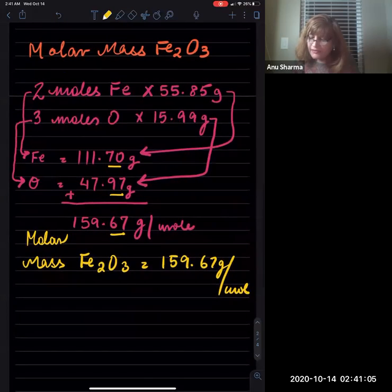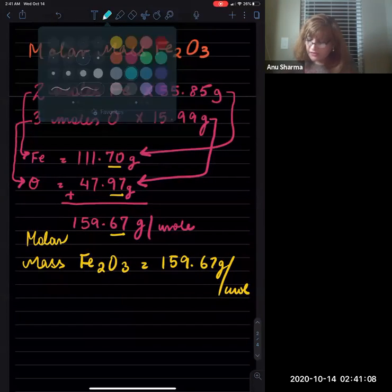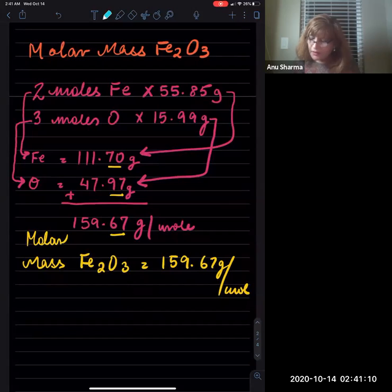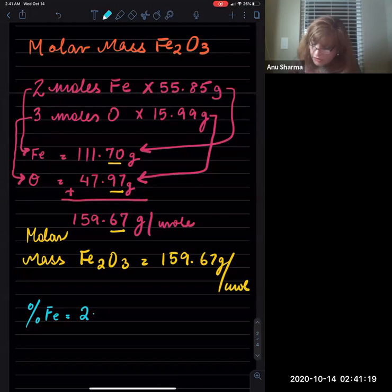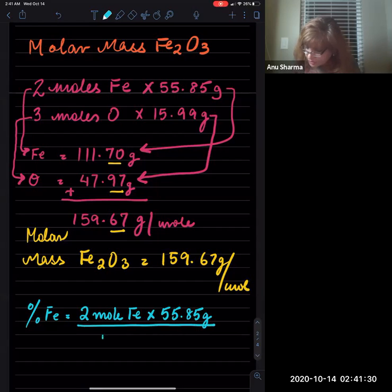Now the percentage of iron is: two moles of iron, each weighing 55.85 grams, divided by the molar mass which is 159.67 grams of Fe₂O₃. 55.85 grams is the molar mass that you get from the periodic table.